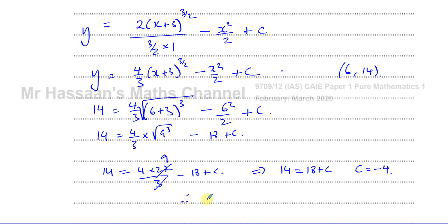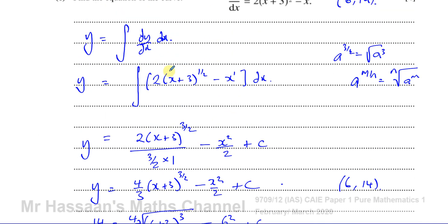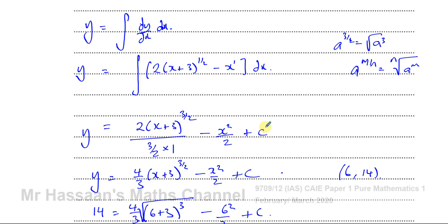Therefore y = (4/3)(x + 3)^(3/2) − x²/2 − 4. That's the answer, using the indefinite integral method where we found c = −4 by substituting the known point (6, 14).